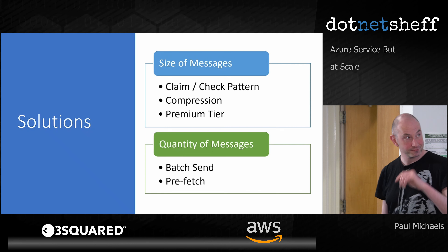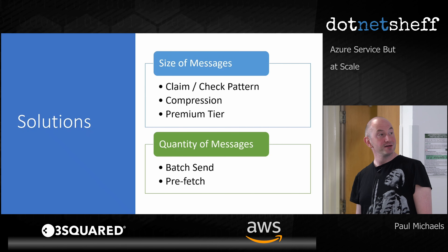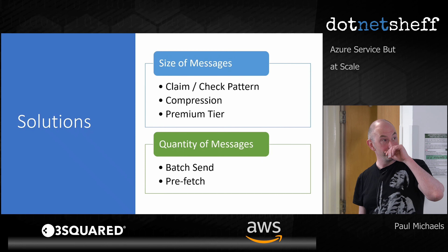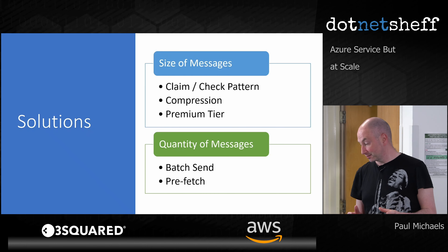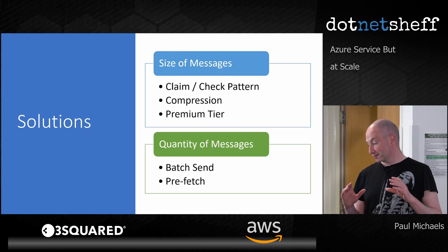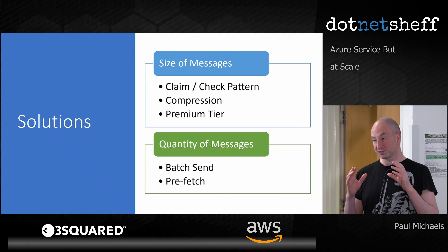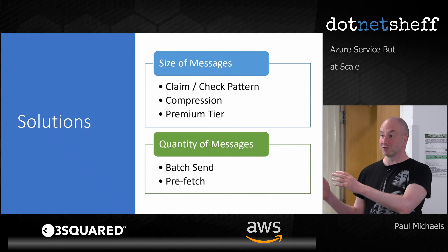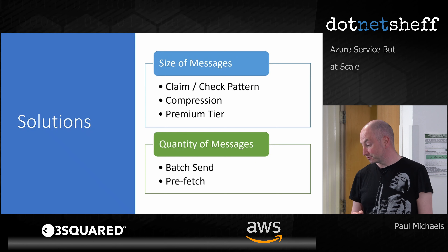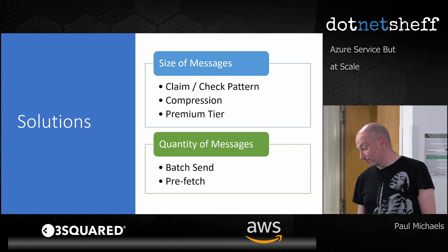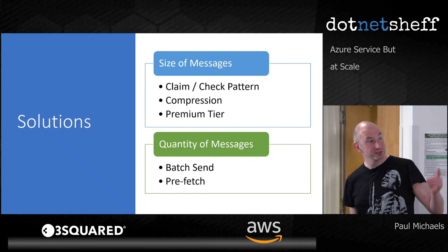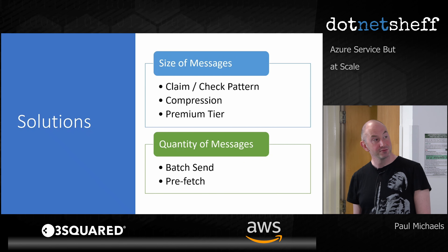These are some solutions I've come across recently when investigating this. In terms of size of messages, there's a type of pattern called a claim check pattern — I'll go into all of these in more detail. You can use it to essentially, instead of passing the information through on a message, tell the subscriber of that message where to go for that information instead of actually passing that information through.